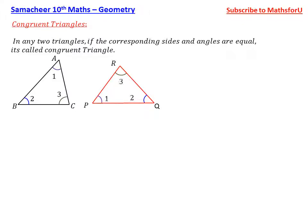So, triangle PQR. Now, this is one, two, three. This angle is the same. These are the corresponding angles — this is the same, this is the same. The corresponding angles are equal, so the angles are the same.